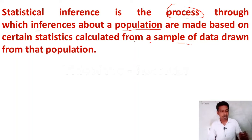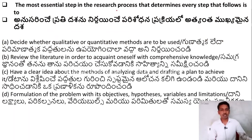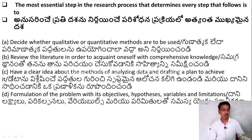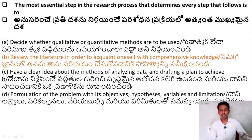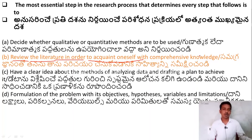I hope you will remember this. The next question: the most essential step in the research process that determines every step that follows is — Option A: decide whether qualitative or quantitative methods are to be used; Option B: review the literature in order to acquaint oneself with comprehensive knowledge; Option C: have a clear idea about the methods of analyzing data and drafting a plan to achieve; Option D: formulation of the problem with its objectives, hypothesis, variables and limitations. The right answer is Option B — review the literature in order to acquaint oneself with comprehensive knowledge. It is the most essential step in the research process.